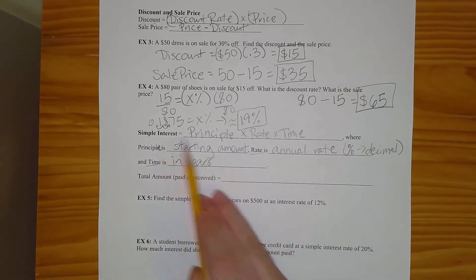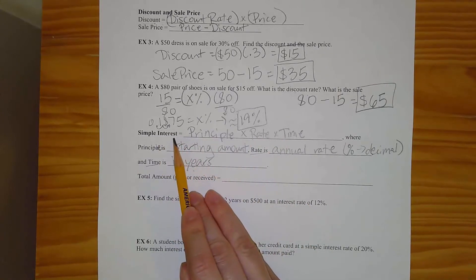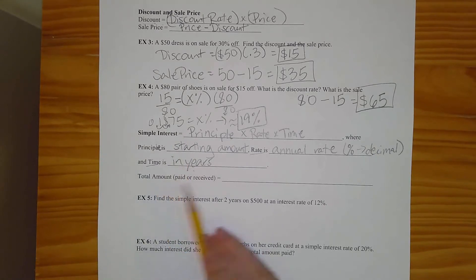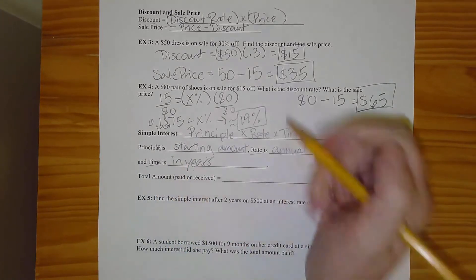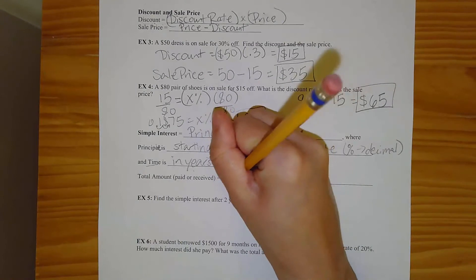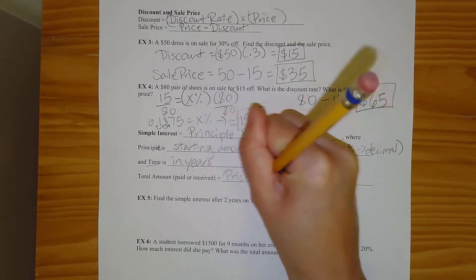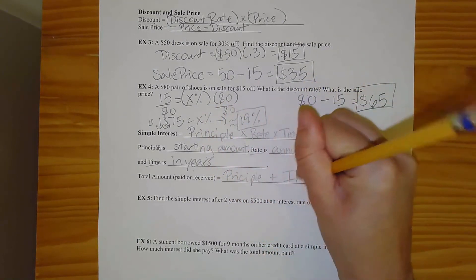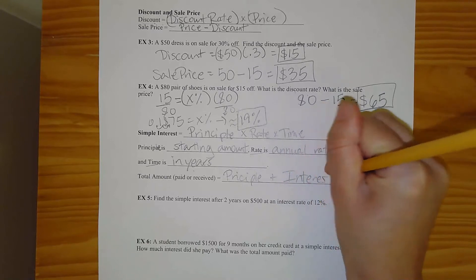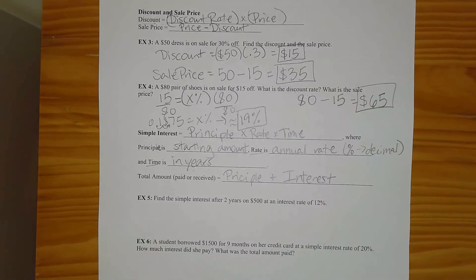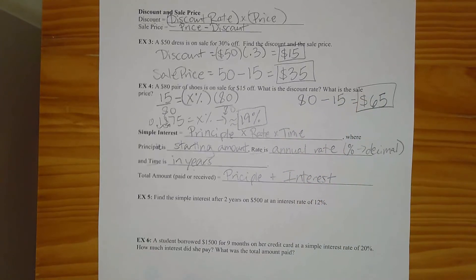So this whole equation just tells you how much interest gets added. The total amount that's paid or received is going to be your principal, that's the starting amount, plus the interest that gets paid over time. All right. So let's do some examples of this.